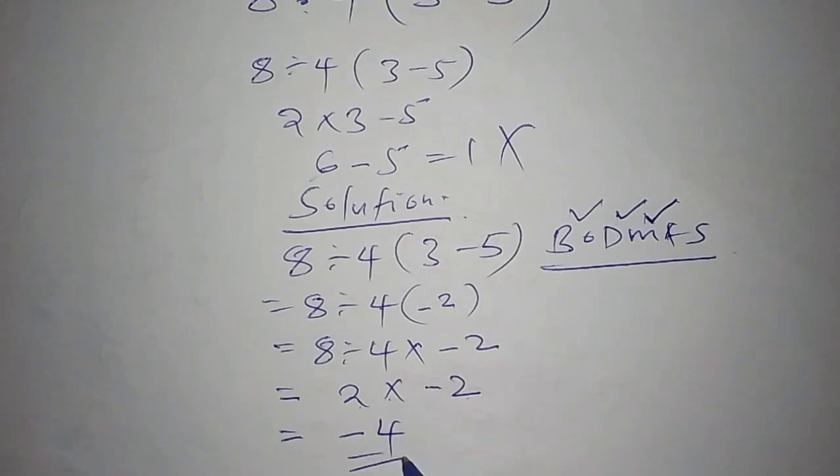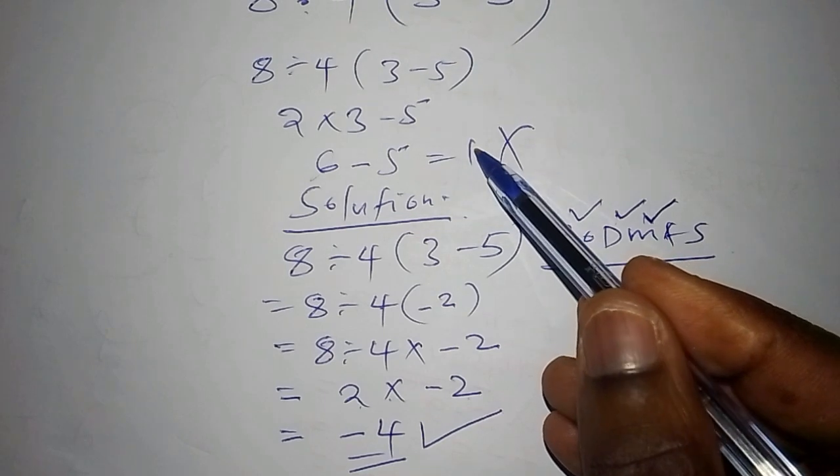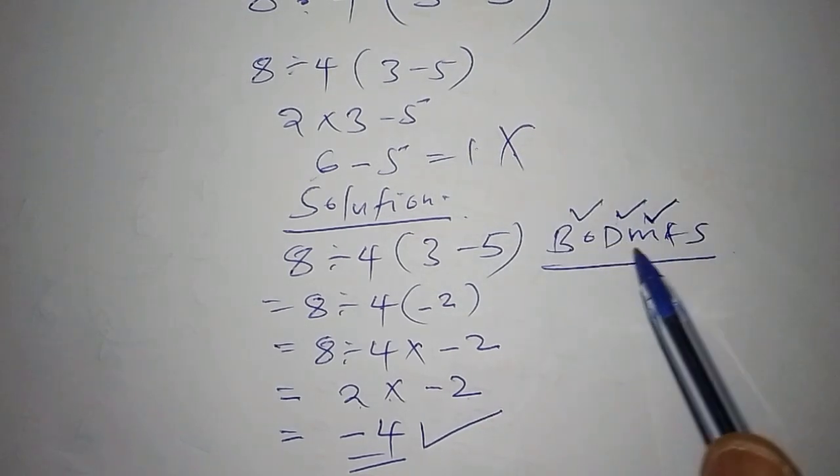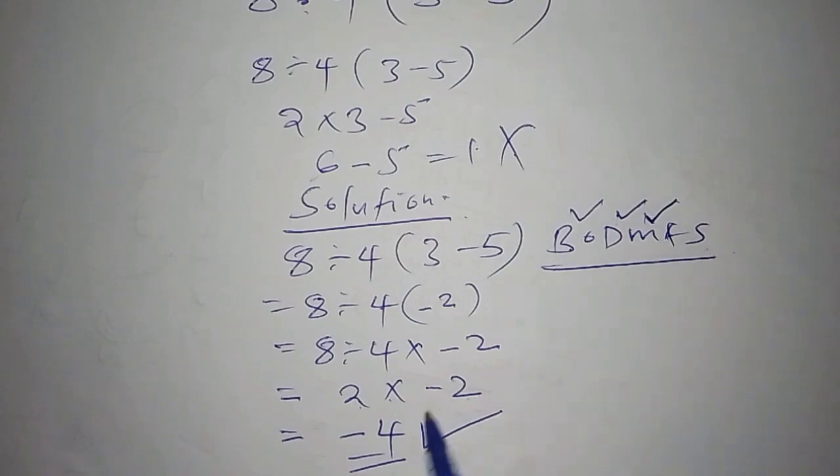The correct answer is minus 4, and not positive 1. Positive 1 was wrong simply because you did not follow the order of operations in working out the mathematics. Minus 4 is correct because the correct order of operations was followed.